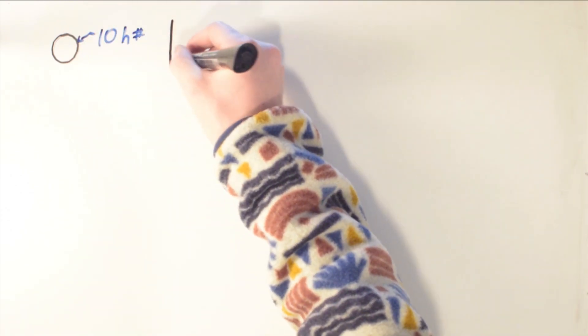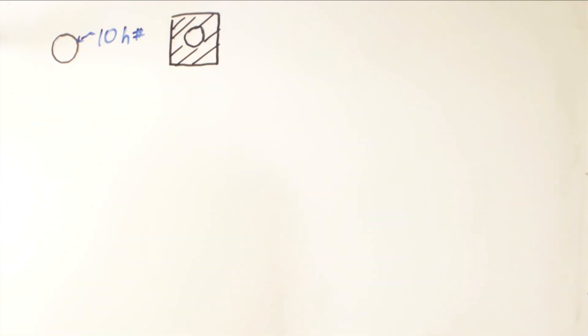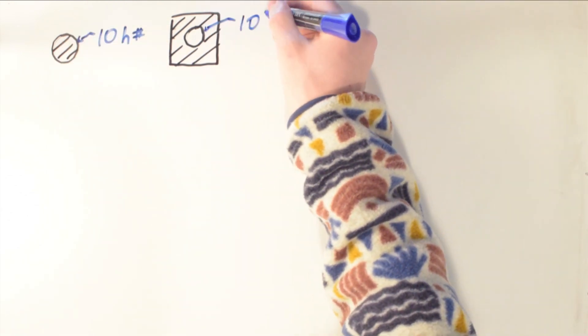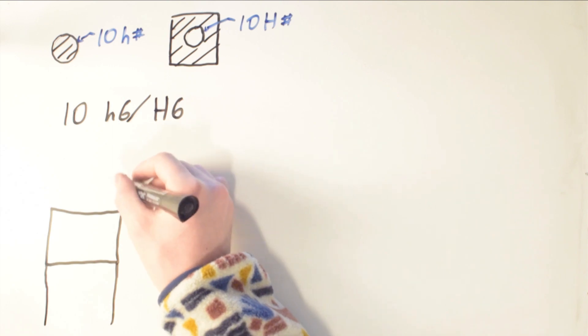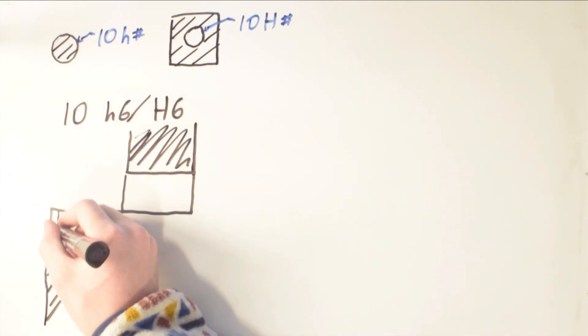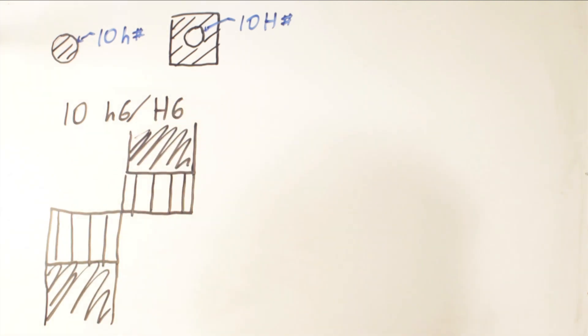If you see the letter H beside either a hole or shaft, immediately you know the MMC of this feature is nominal size. For example, a 10 millimeter H6 shaft is 10 millimeters plus 0 minus 9 microns, and a 10 millimeter H6 hole is 10 millimeters plus 9 microns minus 0.